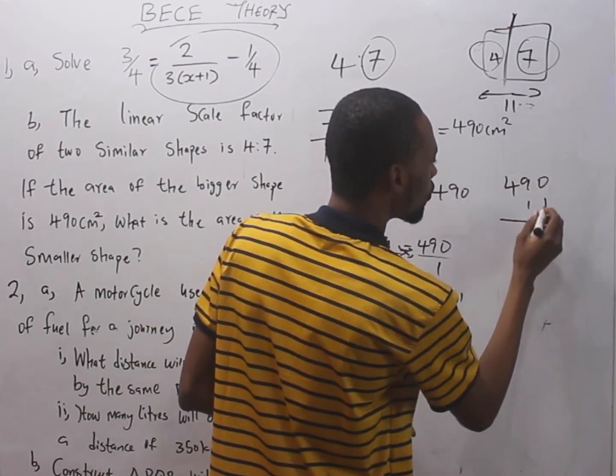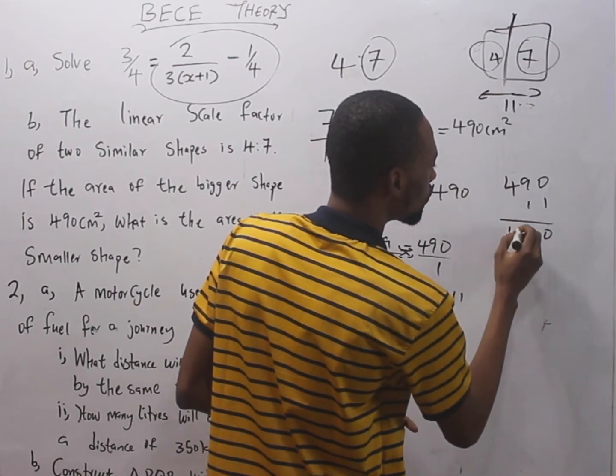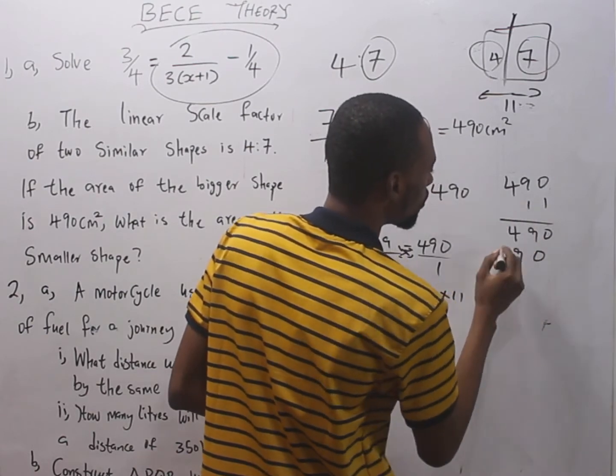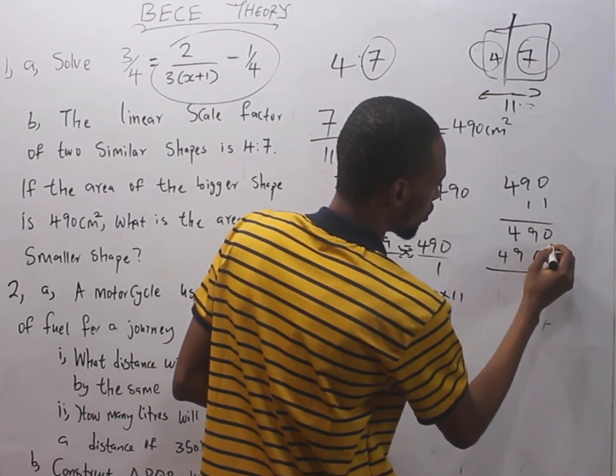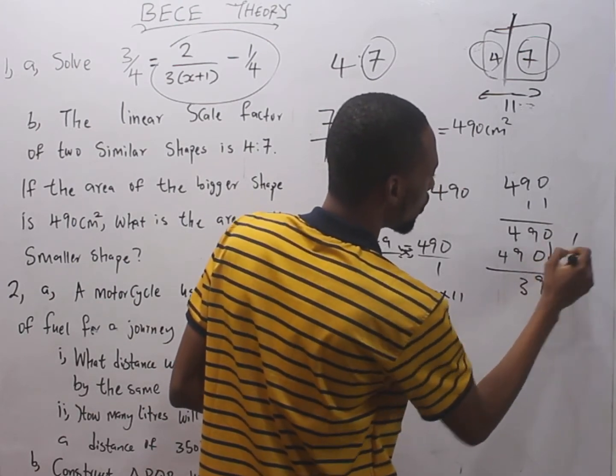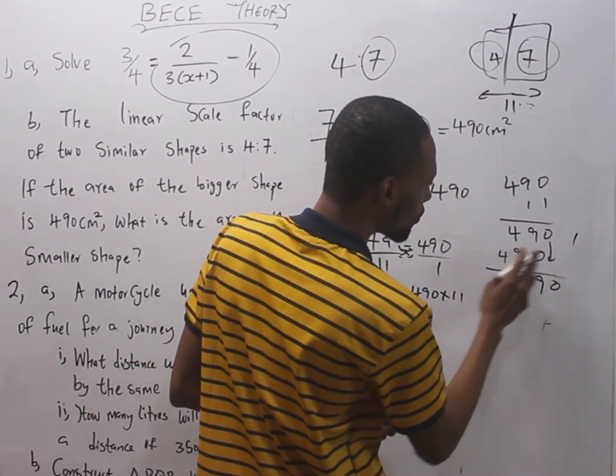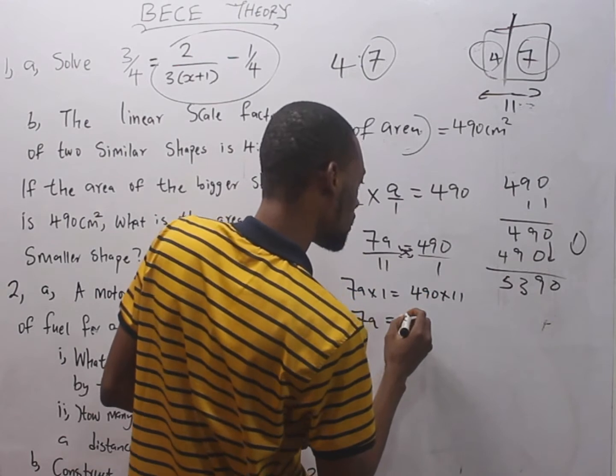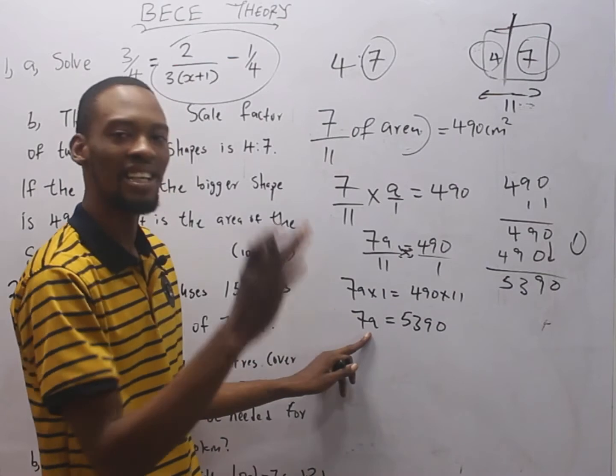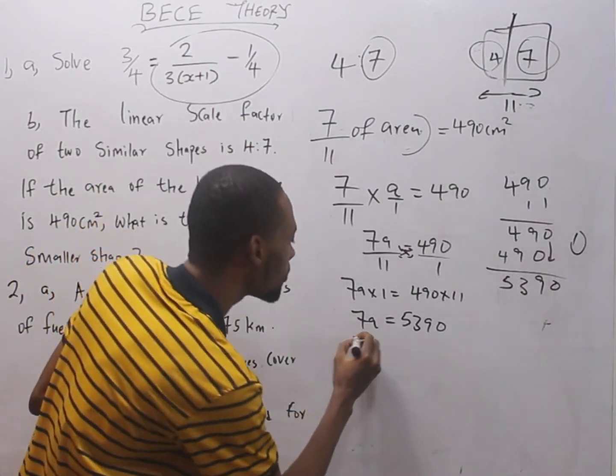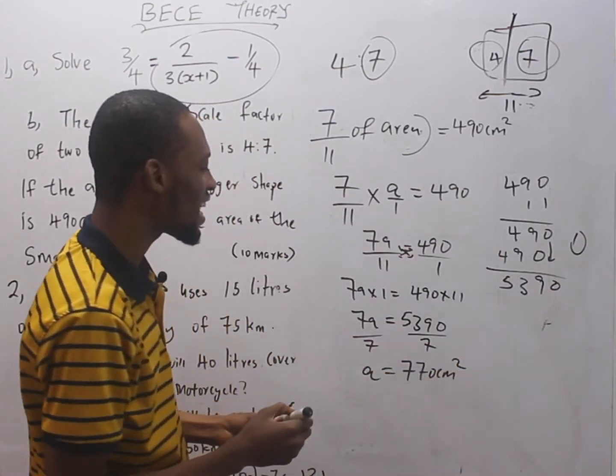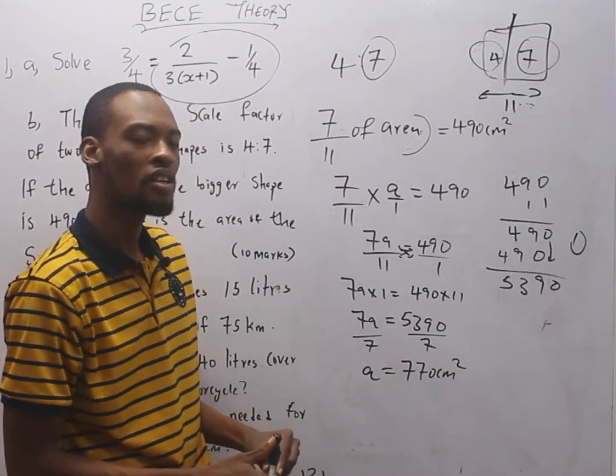1 times 0 is 0, 1 times 9 is 9, 1 times 4 is 4. That will give you 7A equals 5390. We are looking for A now. That is the total area. It will simply be dividing both sides by 7. So A equals 770 cm2. This is the initial total area of the shape.